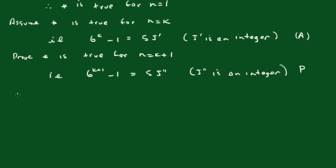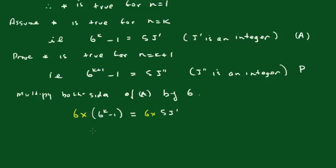Now I'm going to multiply both sides of A by 6. And we get, I'll just do that in a different colour, 6 times 6 to the k minus 1 equals 6 times 5j dash. Now this becomes 6 to the k plus 1, see I'm trying to make the left hand side the same, minus 6 equals 30j dash.